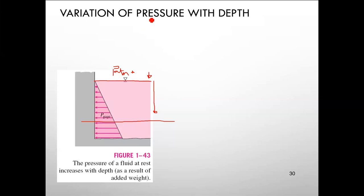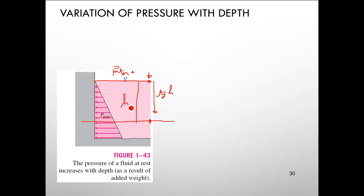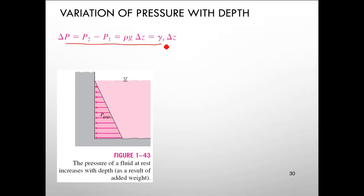The additional pressure from the fluid column is defined with respect to depth h. This pressure equals rho multiplied by g multiplied by h, where rho is fluid density, g is gravity, and h is the depth moved into the fluid. Pressure increases with depth, and this equation will now be derived.